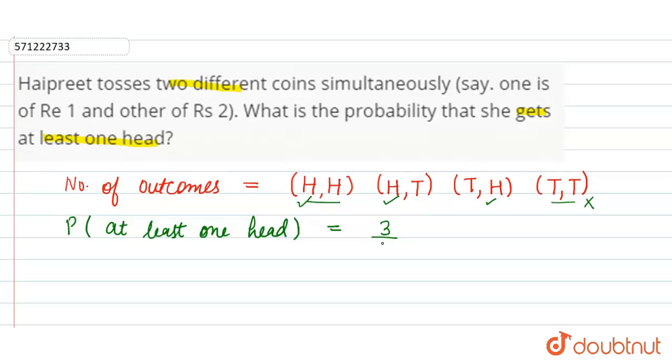So the probability that Haipreet gets at least one head is three by four, and this is the required answer.